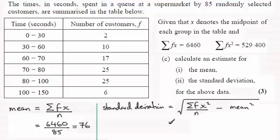So filling in these values then, we've got the square root of sigma fx squared, which is 529,400. This is divided by n, which is 85.